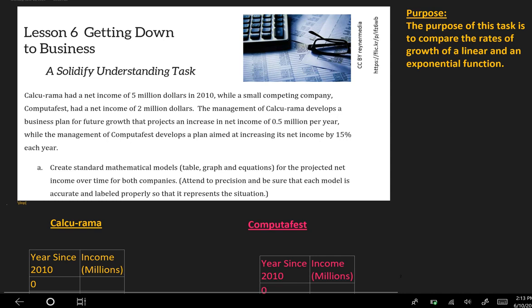We have two businesses described in this paragraph. Calcurama had a net income of $5 million in 2010, and then a competing company, Computafest, that had a net income of $2 million.